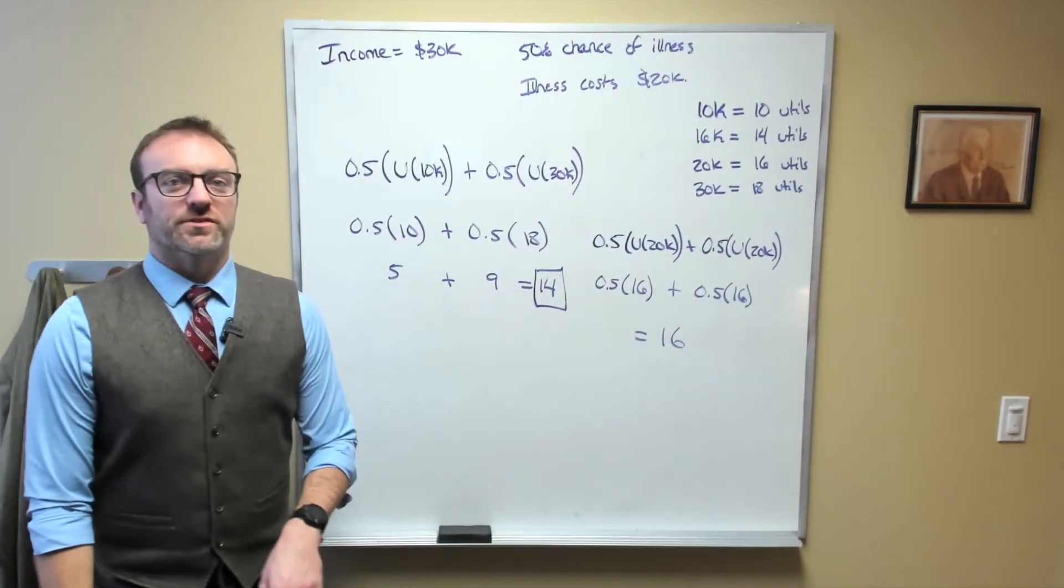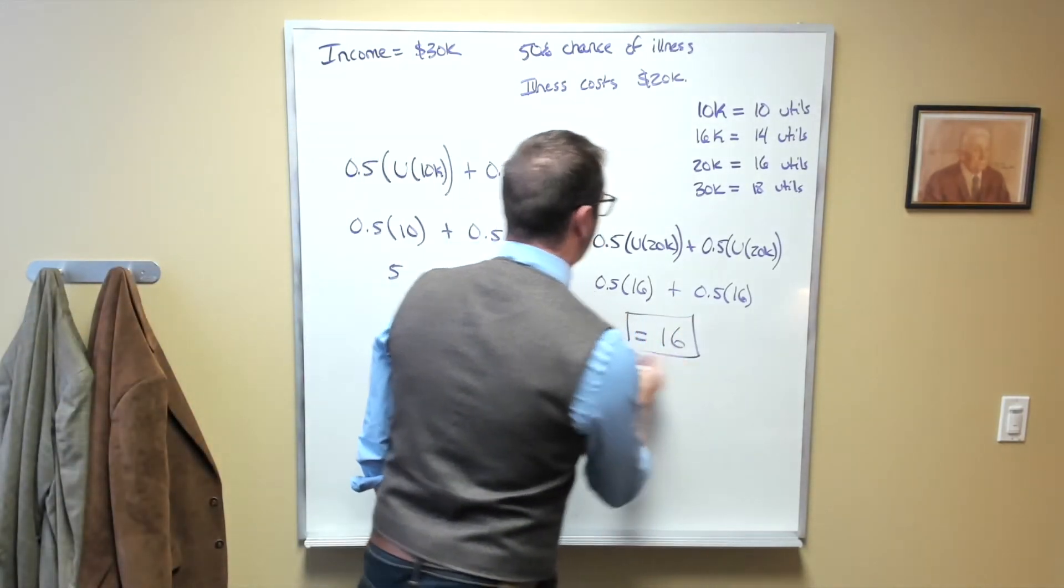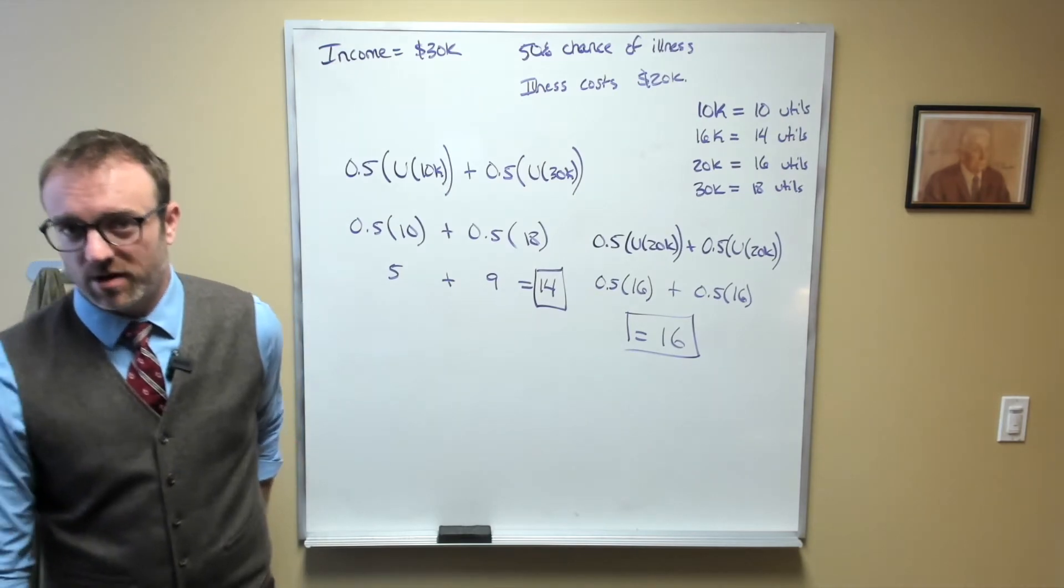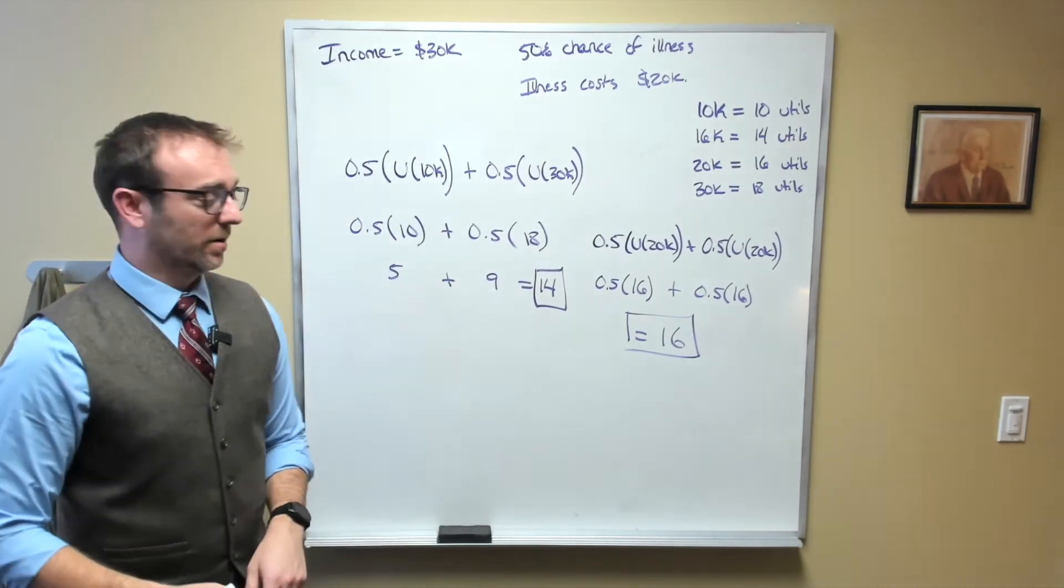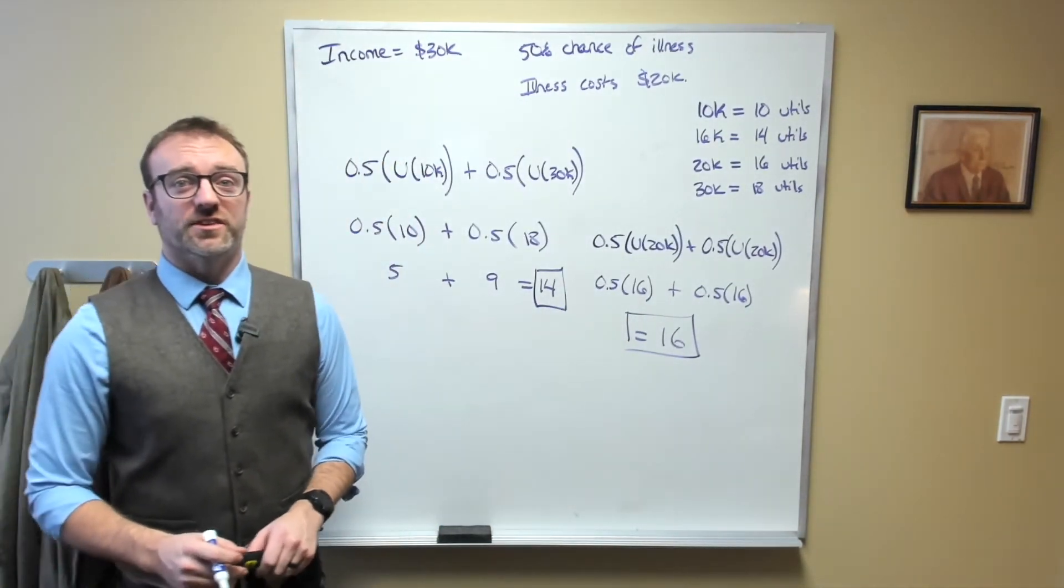So notice what's really interesting here is that with insurance, with the guaranteed payment of $20,000 per year, or rather the guaranteed income of $20,000 per year, this person would have an expected utility every single year of 16.